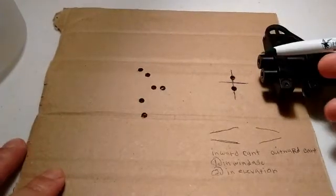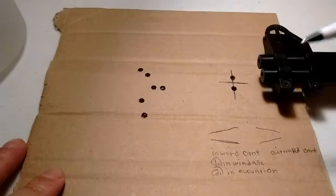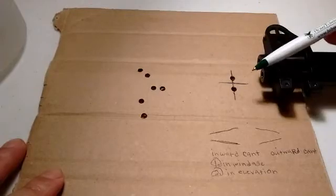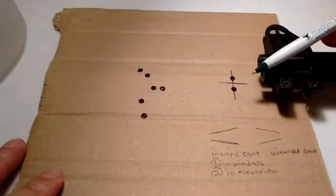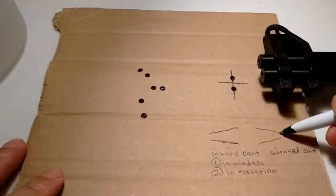And then you've got outward cant. Outward cant is when you have these two barrels here and one pellet goes up this way, okay, and then one goes down this way. And that would make it open up a little bit like that. So here it is.